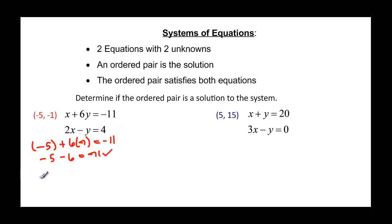If we put it into the second equation, we have 2 times our x, which is negative 5, minus our y, which is negative 1, and that's supposed to be equal to 4. Well 2 times negative 5 is negative 10, negative times a negative 1 is going to give us plus 1, and that is not equal to 4. So negative 5, negative 1 is not a solution to the system.